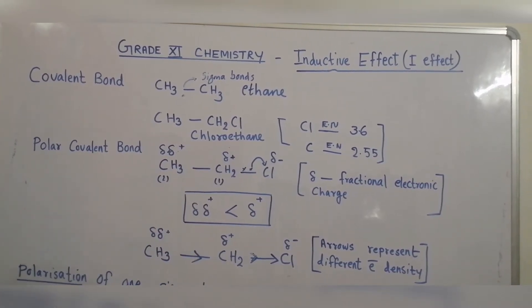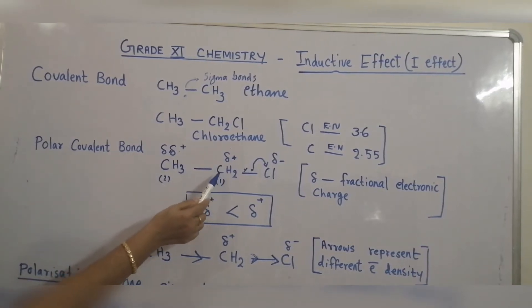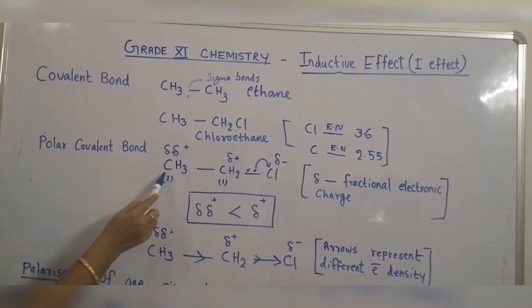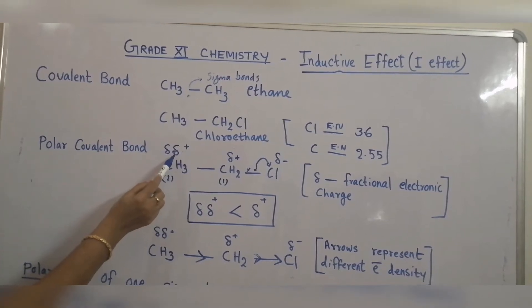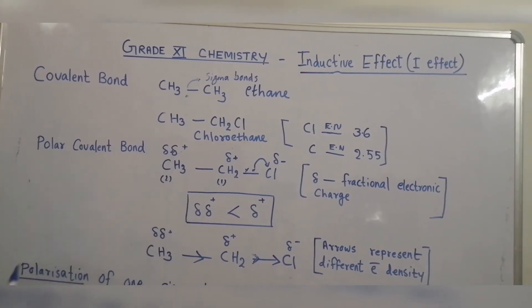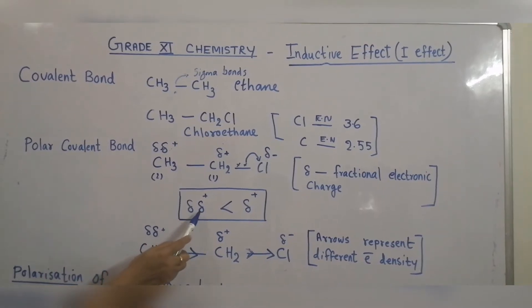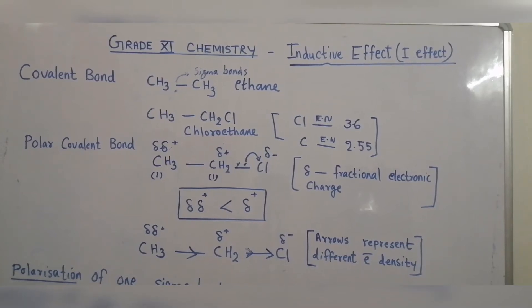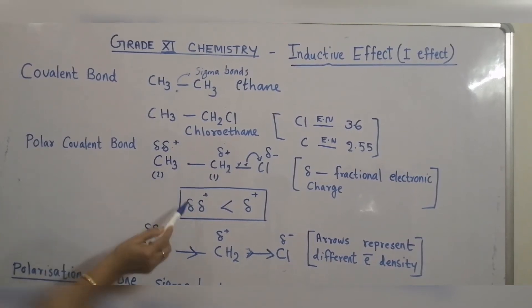So there is polarity induced — polarity is introduced in the bond. This introduction of polarity induces polarity in the neighboring carbon, carbon number 2. Carbon number 2 develops a fractional positive charge represented by delta-delta positive. It is found that delta-delta positive is less than delta positive. So as the distance increases from the carbon-chlorine bond, the fractional electric charge decreases.